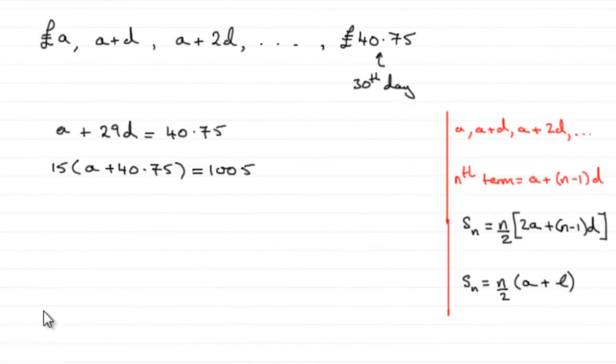Okay, so for this last part, we've just got to find out what A and D are. And to do this, we've got the two equations that we've already established. In the very first part, we found that A plus 29D equaled 40.75. So I'd call that equation one.